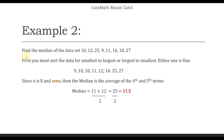Sa example 2 naman, for example we have this data set — dinagdagan lang natin ng isa pa, 27 in the end. Just to make the illustration easier. Ganun pa din — you must sort the data from either smallest to largest or largest to smallest. Ito yung kaibahan niya doon: kapag even, dalawa yung number na pipick-upin mo. Yung una doon sa mathematical model natin: n over 2 — so 8 divided by 2 — that would be 4th term. Tapos yung kasunod niya, which is the 5th term, yun yung pipick-upin mo: 1, 2, 3, 4 and 5 — that would be the middle.